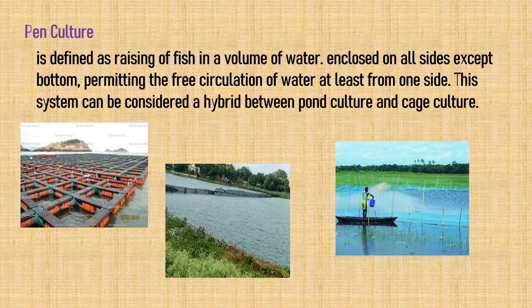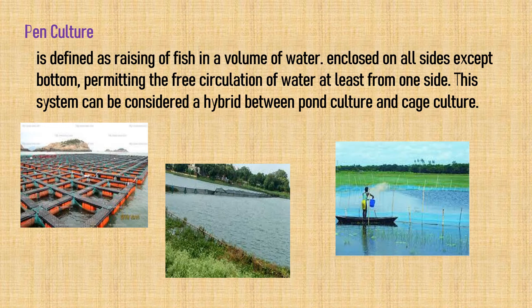The next practice is pen culture, defined as raising fish in a volume of water enclosed on all sides except the bottom, permitting free circulation of water from at least one side. This system is considered a hybrid between pond culture and cage culture, requiring a high volume of water with pens placed on the sides.